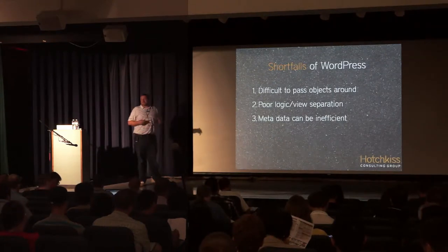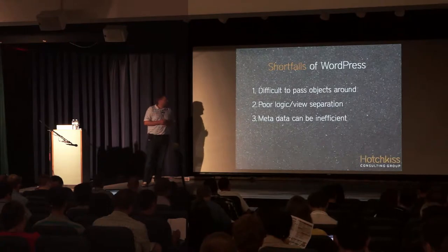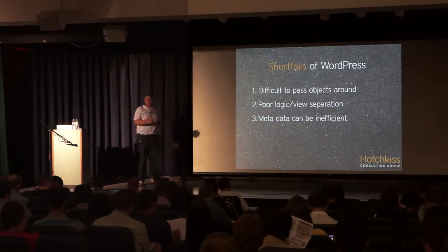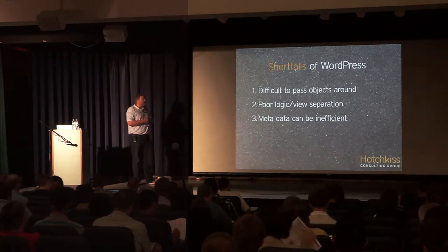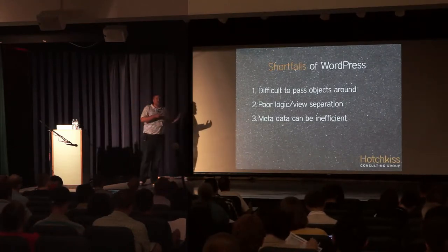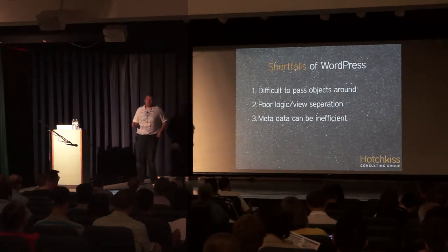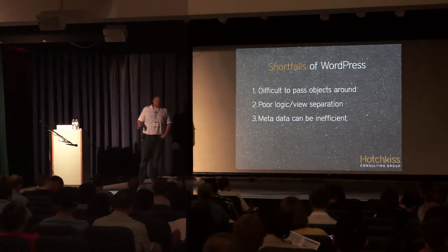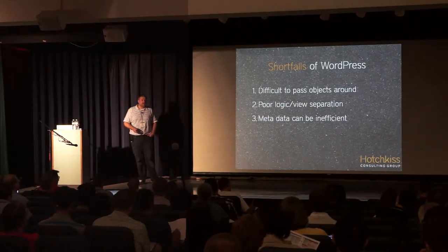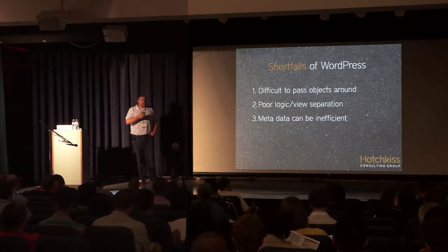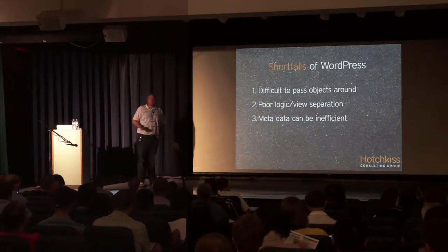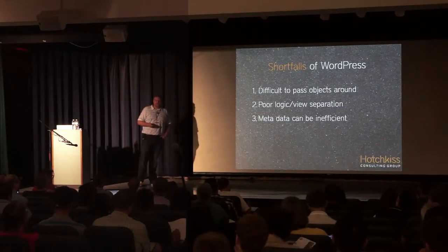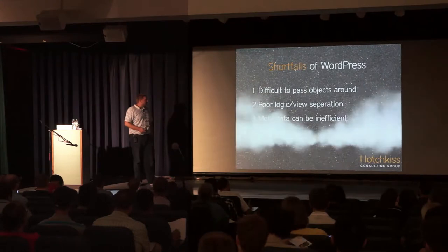One of the biggest problems is with the database structure of WordPress. It makes a lot of sense for a CMS or basic blog, but the big issue is you can't query by meta values — meta values aren't a key in the table. Technically you can, but as soon as your site hits any sort of scale, you'll get into big trouble. There are times you have to look at the table structure, and while sometimes that's not recommended, it can make a lot of sense.